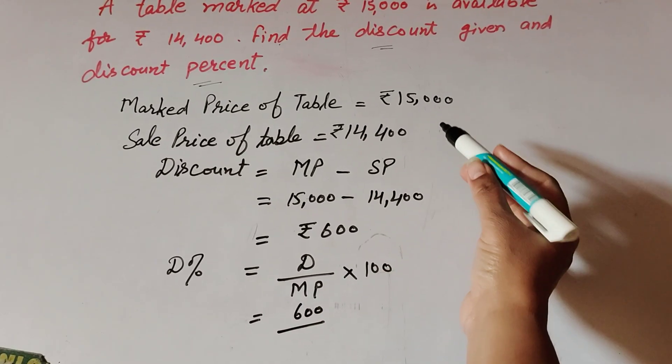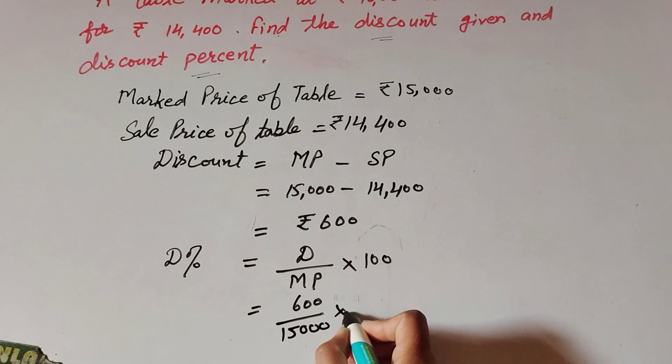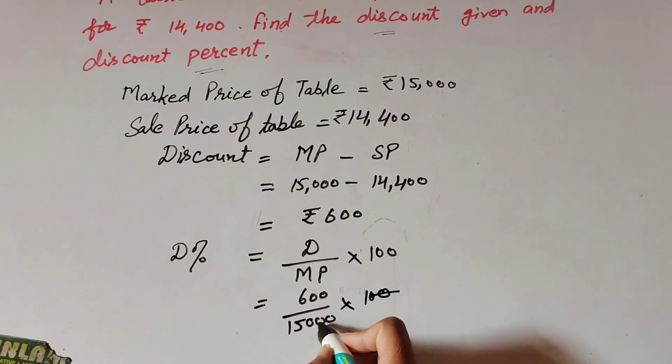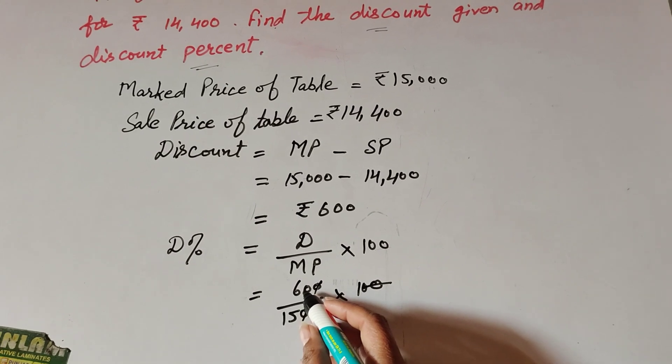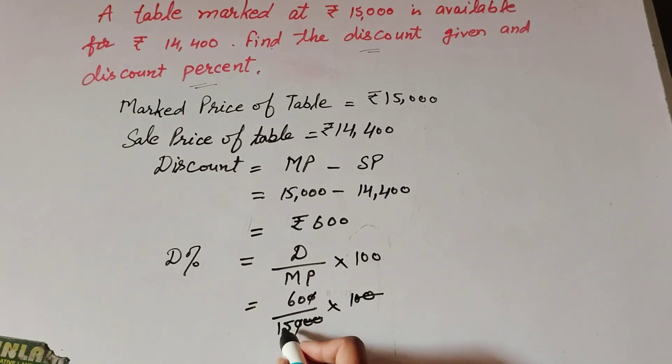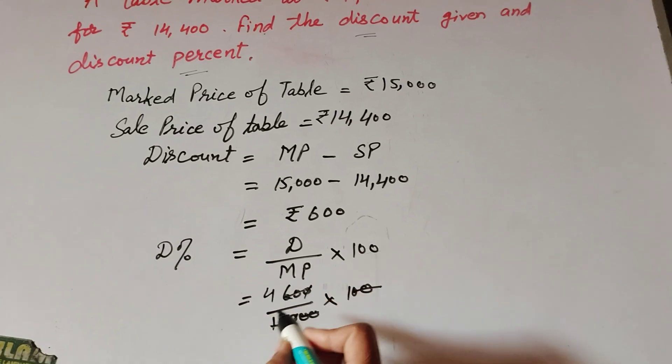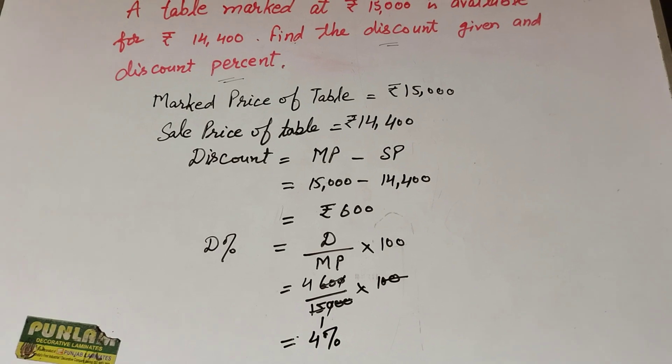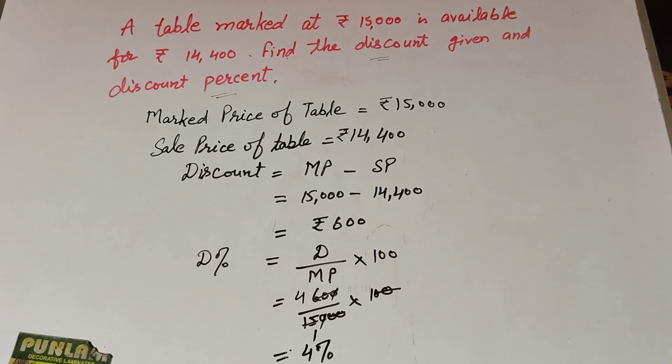So two zeros in numerator and two zeros in denominator, both are cancelled. 60 divide by 15... we get 4 percent discount. Thanks for watching, like, comment and share my video. Subscribe to my YouTube channel.